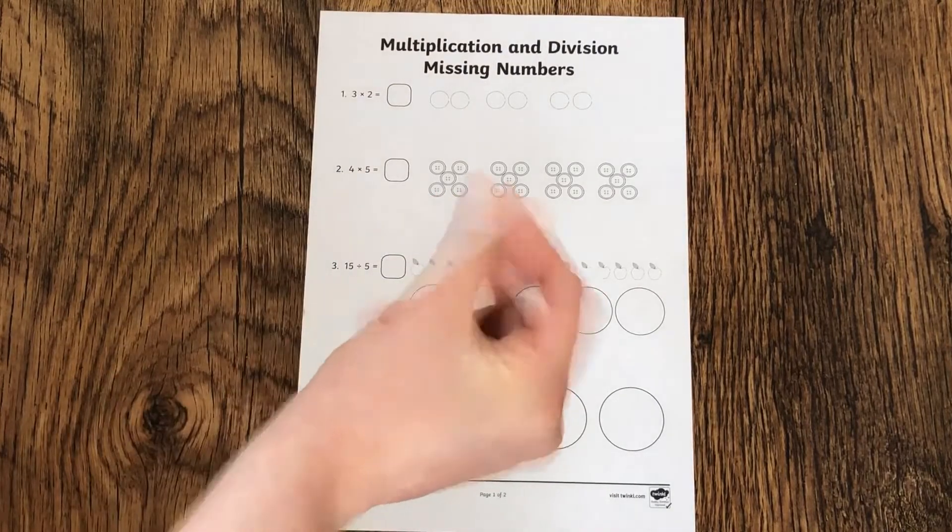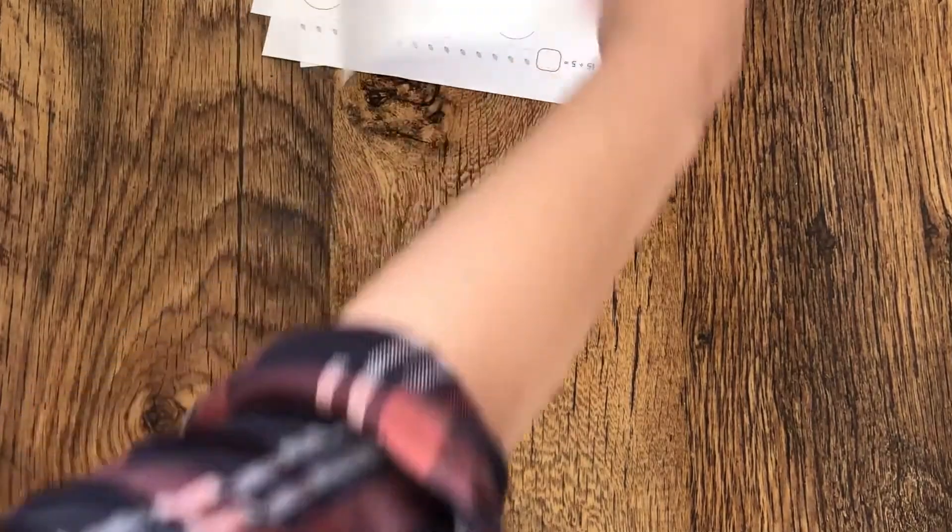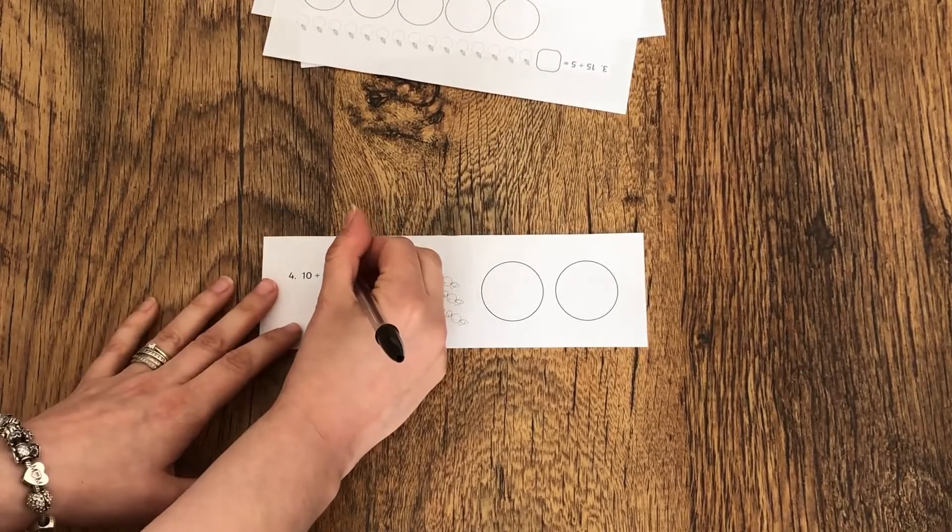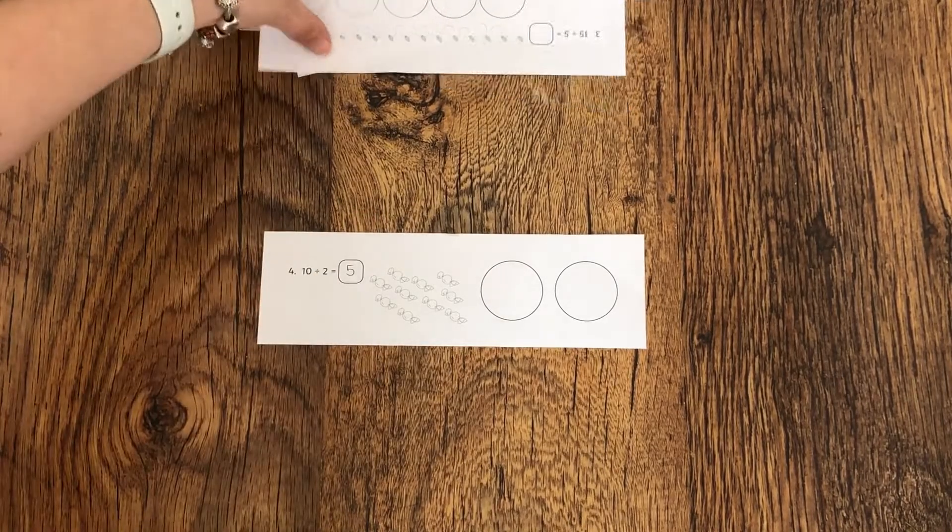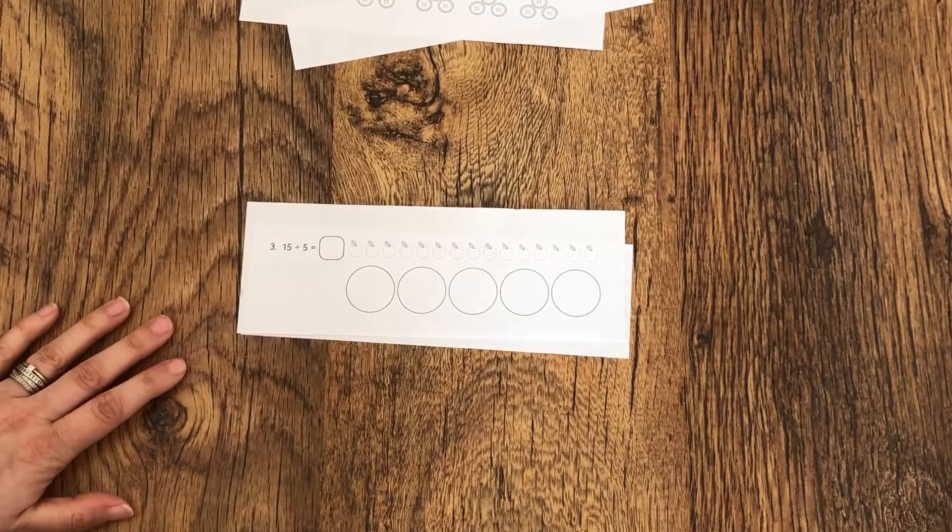One of the best ways to help your child develop their skills with division and multiplication is for them to practice and put their skills to the test. So why not cut them up into strips so children can practice after they have finished their work.